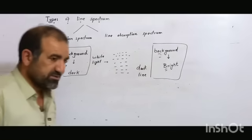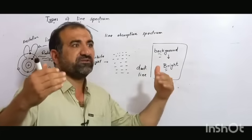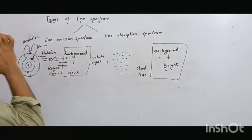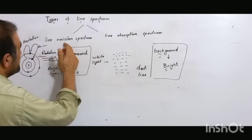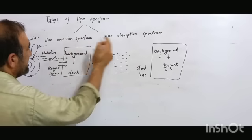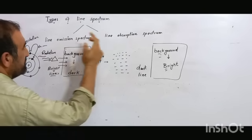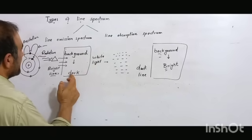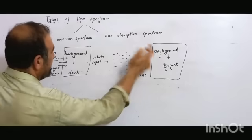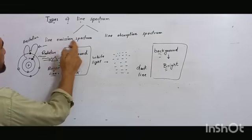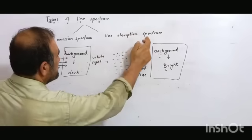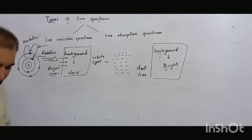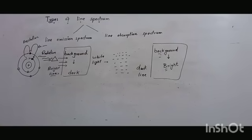The spectrum obtained which contains dark lines on a bright background is called Line Absorption Spectrum, or Atomic Absorption Spectrum. In this case, there are two different situations and definitions.